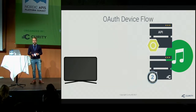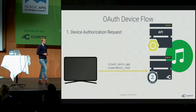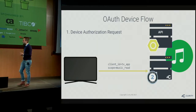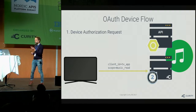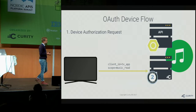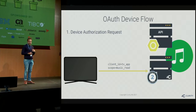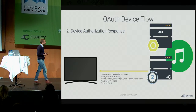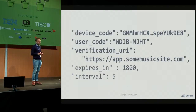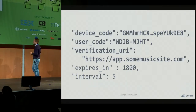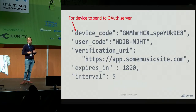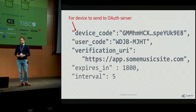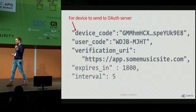Let's look at the device flow. We've got the API, the OAuth server, and the TV. First, the TV sends what's called a device authorization request to a new endpoint, with two parameters: client_id and scope — and optionally the client secret. The OAuth server responds with a device code, a user code, a verification URI, an expires_in value, and an interval. The device code is what the device uses to check in with the OAuth server, and the device should hold on to it to poll for when the authorization is complete.